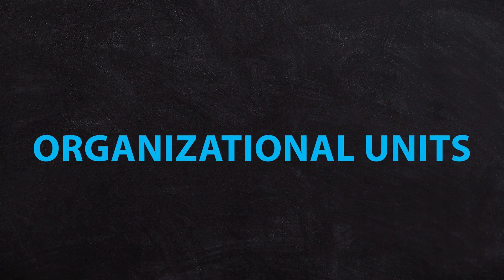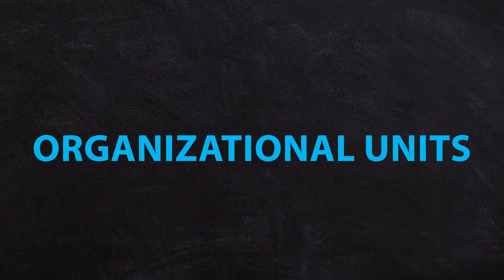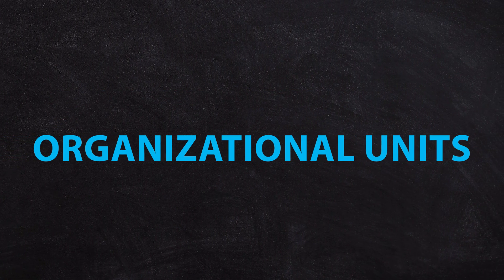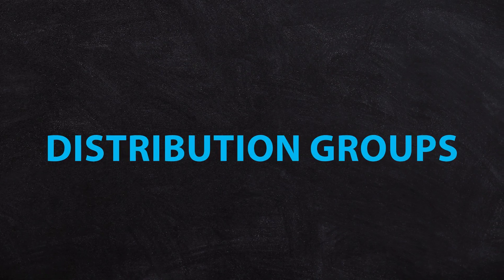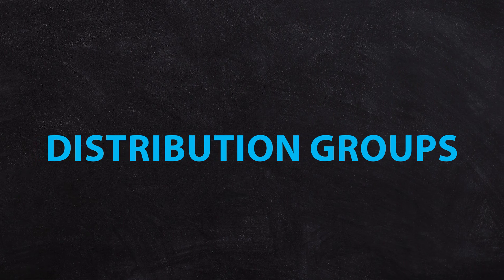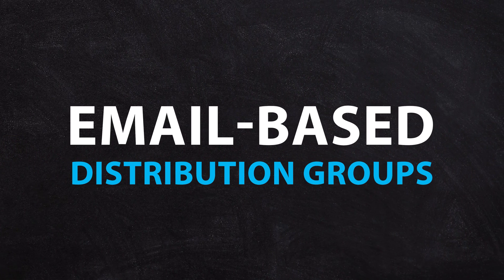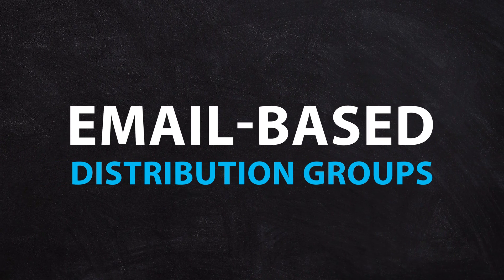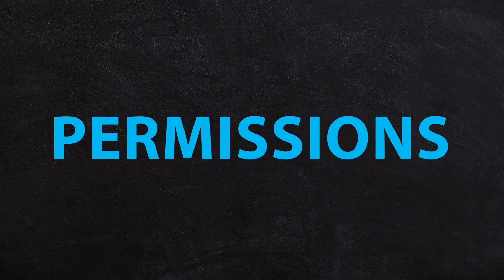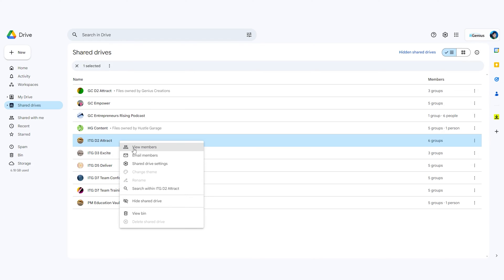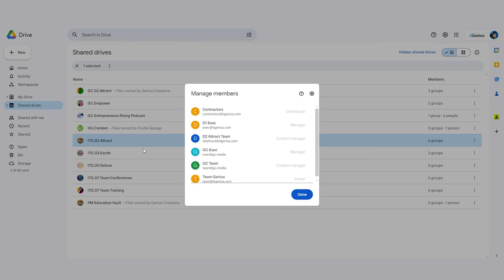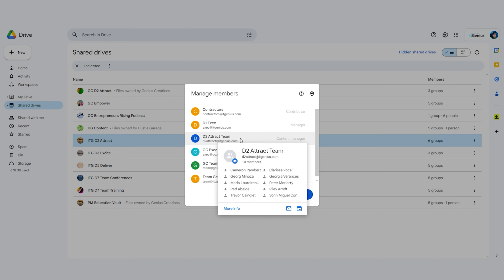There are your organizational units, and those organizational units can be used for some security group features. But there are also distribution groups, and those email-based distribution groups are very handy for using for permissions. The permissions that you configure inside Google Drive, I tend to use distribution groups for rather than organizational units.